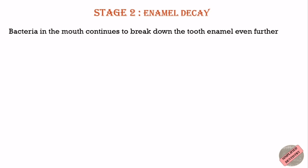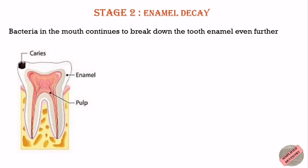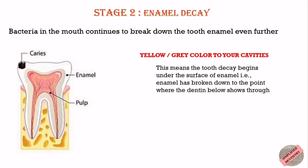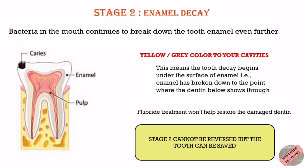Stage 2 is enamel decay. After the first stage of demineralization, the bacteria in your mouth continues to break down your tooth enamel even further. At this point, you might notice a yellow or gray color to your cavities. This means that the enamel has broken down to the point where the dentine below shows through. And unlike your outer enamel, fluoride treatment won't help restore the dentine. So once these yellow or gray colored cavities appear, they are irreversible. But early treatment often stops the decay from worsening, avoiding the need to fill the cavity.